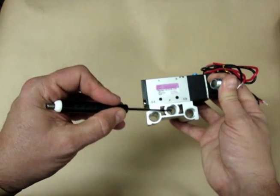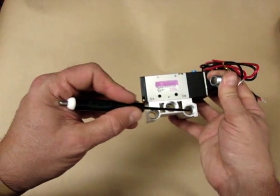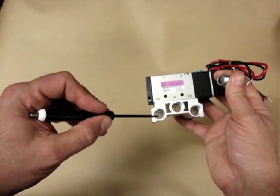Your air in for all of the solenoids is going to come through the middle, and your exhausts are going to come out the ends here.